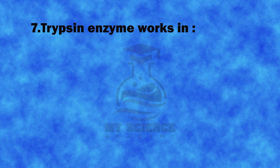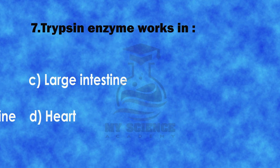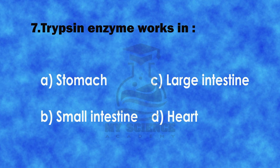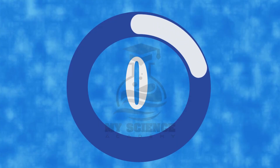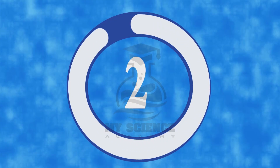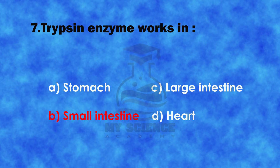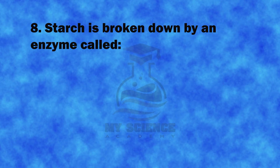Question 7: Trypsin enzyme works in: A. Stomach, B. Small intestine, C. Large intestine, or D. Heart. The correct answer is B. Small intestine.